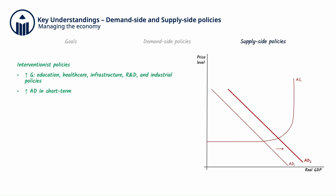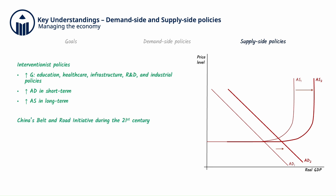The supply-side effects of these policies are that they increase aggregate supply (AS) in the long term, as shown in the rightward shift from AS1 to AS2. China's Belt and Road Initiative during the 21st century is a great real-world example of interventionist supply-side policies. While these policies may increase productive capacity and lower income inequality, they can be inflationary and are a great burden on the government budget.